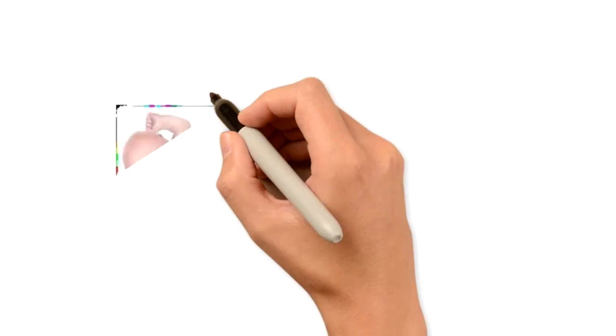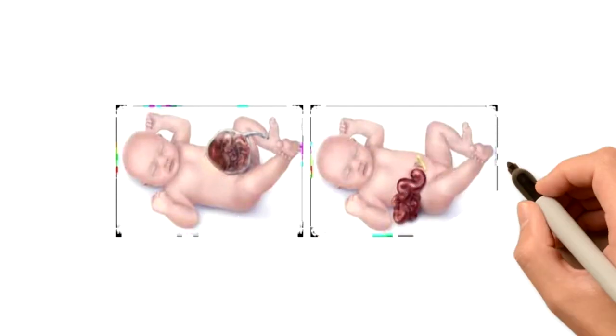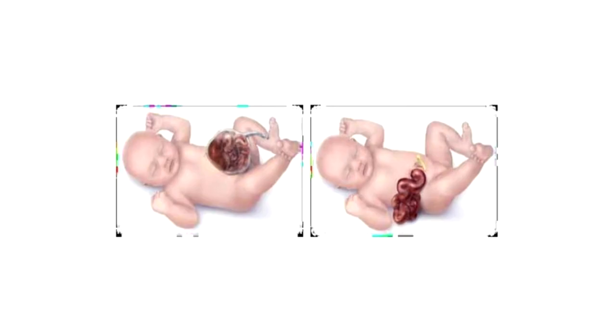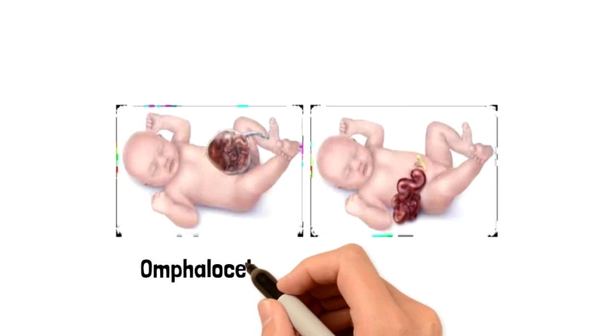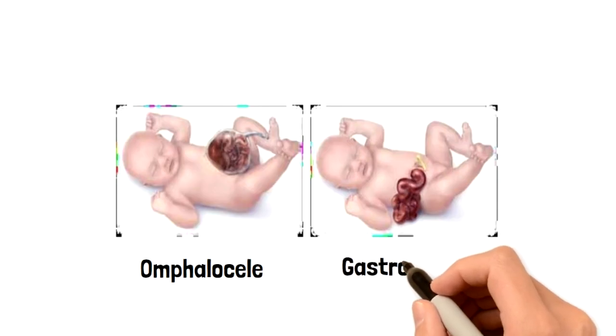Now that's the difference between the two. Now here I have a picture of the two so you can visually see. On the left side we have an omphalocele and you can see it being encompassed within its own membrane. On gastroschisis on the right side.